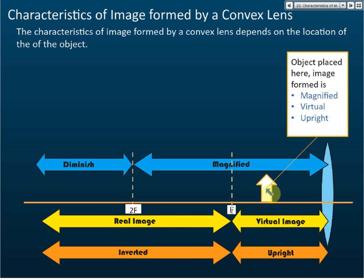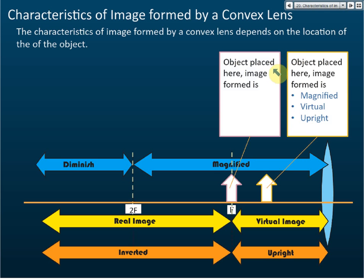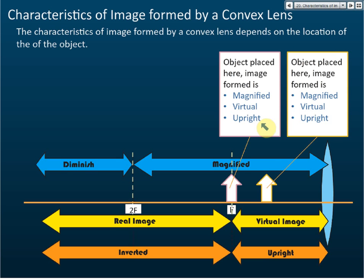If you put your object exactly at F, the image formed is magnified, and it's still virtual and upright — the same characteristics as when the object is in Section 1.